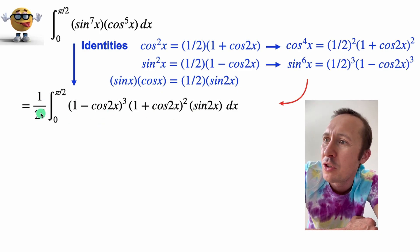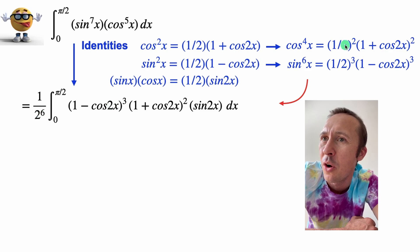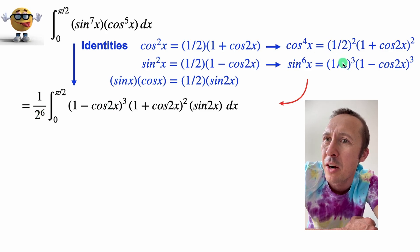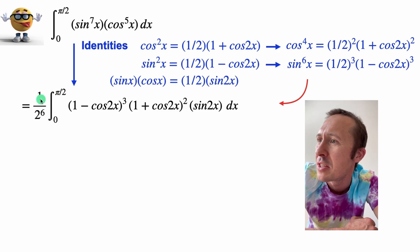Now this first part, one over two to the six, this is just collecting all the one halves. So here's a one half squared, a one half cubed, and then a one half. So there's six one halves, so this is one over two to the power of six right here.